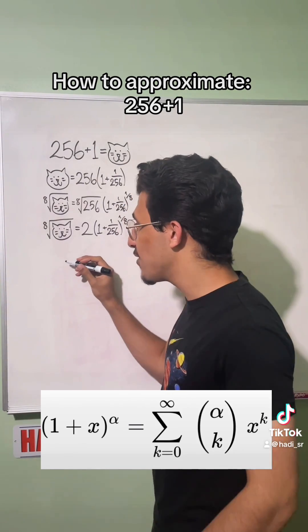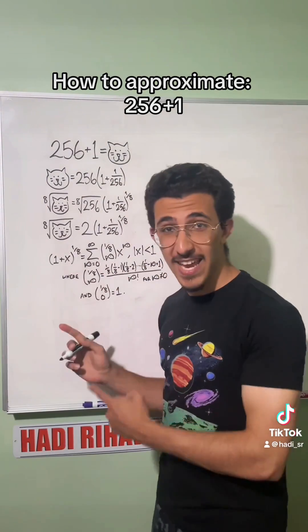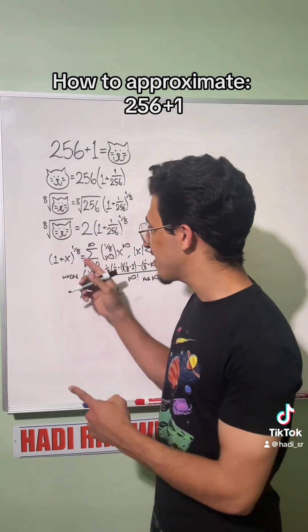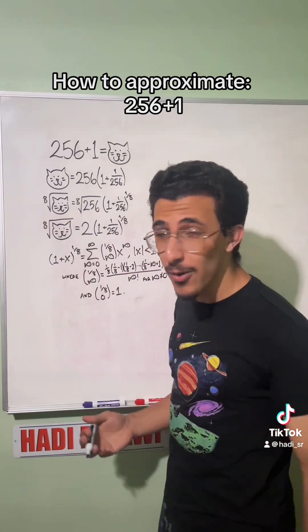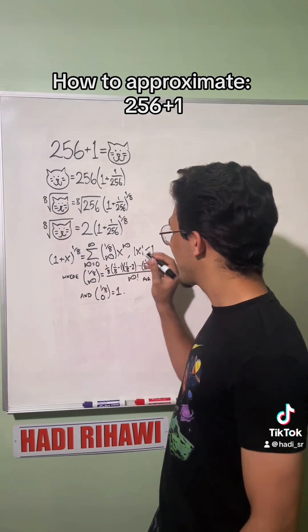So I'm just going to give it to us right now. Source: trust me bro. This is the Taylor series slash binomial series for (1 + x) to the one eighth power. And if you've taken calc 1, I leave this as an exercise for you to prove. The proof is trivial.